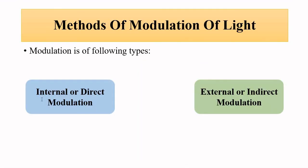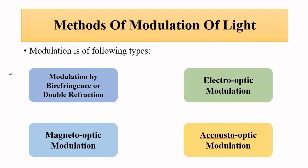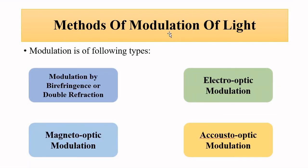There are two ways to achieve modulation: internal or direct modulation, which deals with the photoelectric effect and changing current or voltage to alter light characteristics (to be discussed with LED and laser), and external or indirect modulation methods, which will be covered in the next upcoming videos.